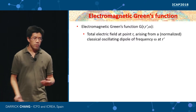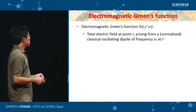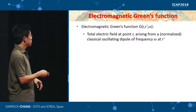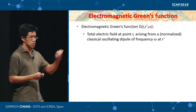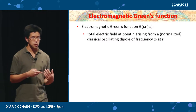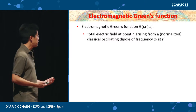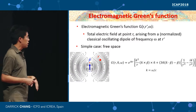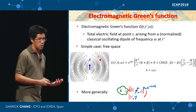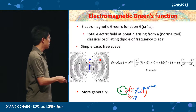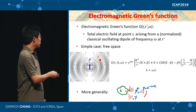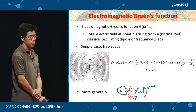I need to introduce one mathematical object: the electromagnetic Green's function. It answers this question — if I have a classical oscillating dipole at frequency ω at point r', what's the total electric field seen at point r? In free space it's just the famous dipole lobe radiation pattern. Importantly, the Green's function can also be defined in the presence of more complex structures, like a dielectric object nearby, in which case the total field includes a rescattered component off the dielectric.